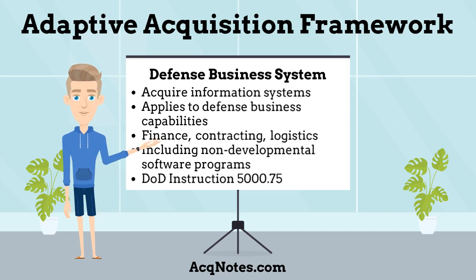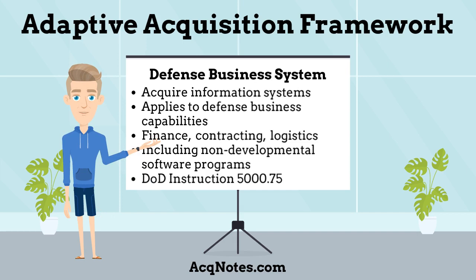The fifth Adaptive Acquisition Pathway is the Defense Business System. The Defense Business System is used to acquire information systems that support DOD business operations. This pathway applies to defense business capabilities and their supporting business systems, to include financial, contracting, logistics, planning and budgeting, installations management, human resources management, and training and readiness systems. It may also be used to acquire non-developmental, software-intensive programs that are not business systems. The main guidance is DOD Instruction 5000.75, Business System Requirements and Acquisitions.